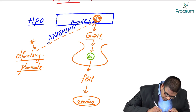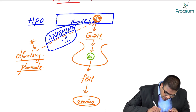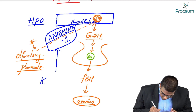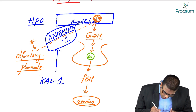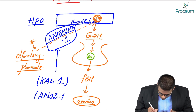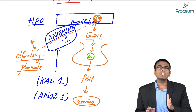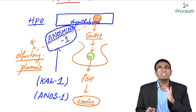That protein is known as anosmin-1, and it is an important protein that helps in this migration. The gene responsible for producing anosmin is the KAL1 gene, also known as the anosmin gene. This gene produces the protein anosmin-1, which is necessary for the migration of GnRH-producing neurons from the olfactory placode to the hypothalamus.